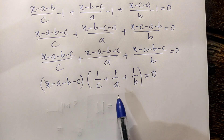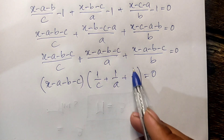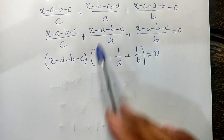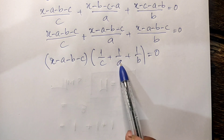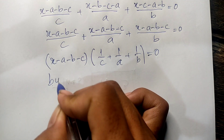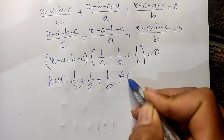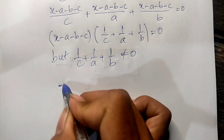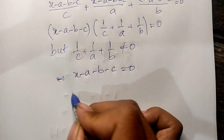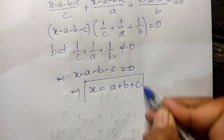So now we have two factors equal to 0. We know that a, b, c are positive constants, so 1 divided by c plus 1 divided by a plus 1 divided by b is not equal to 0. Therefore, we get h minus a, h minus b, h minus c is equal to 0, and so h equals a plus b plus c. That is our solution.